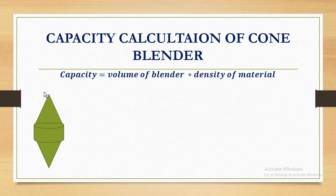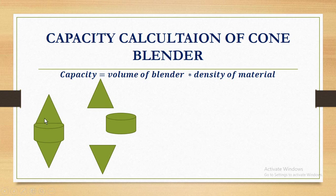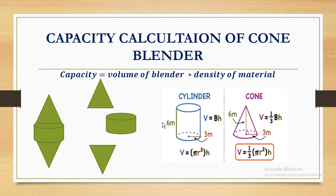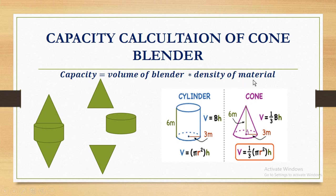There is a diagram of the cone blender. The shape consists of a cylindrical section in the center, and cone sections on top and bottom. For the cylindrical part, the formula is V = π r² h. For the cone sections, the formula is V = (1/3) π r² h. You calculate each section separately, add them together, and then multiply by the density of material to get capacity in kg.